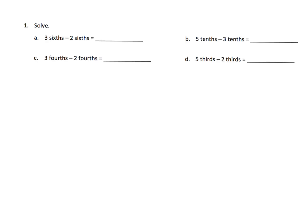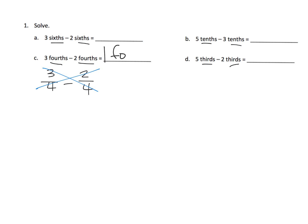Here we're using the units model. Instead of everything being written as fractions, they're written as units. For example, three-fourths minus two-fourths is one-fourth, and that's how students write it. If students are high flyers and want to write it as a fraction, they're welcome to, but at this point we're really looking for answers written in word form — one-fourth — with a label like that.